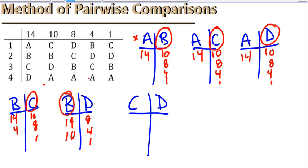And the last head-to-head competition is C versus D. That's 14 votes for C, 10 more votes for C, D gets 8, D gets 4, C gets 1, C wins.